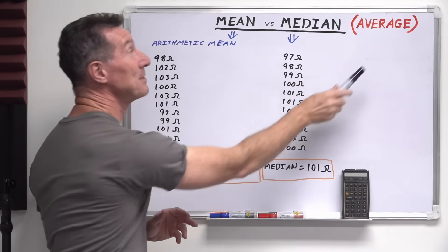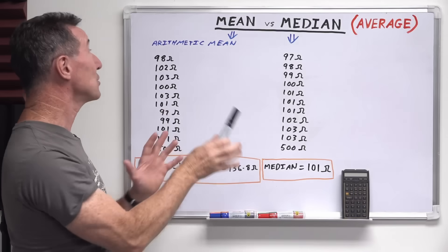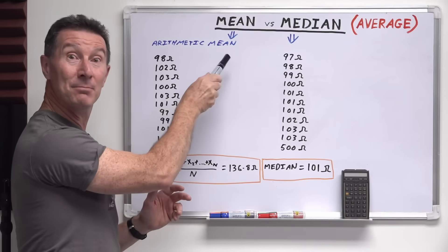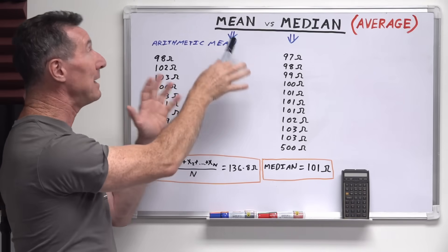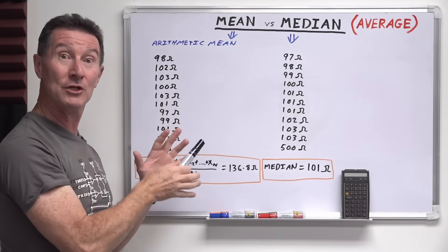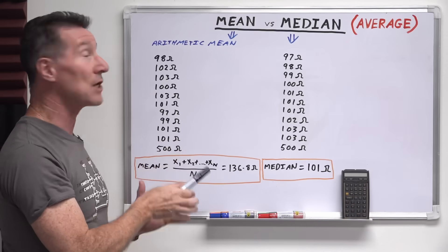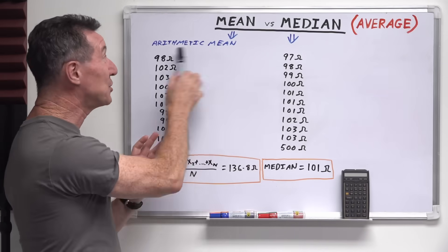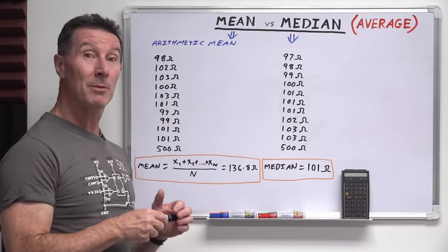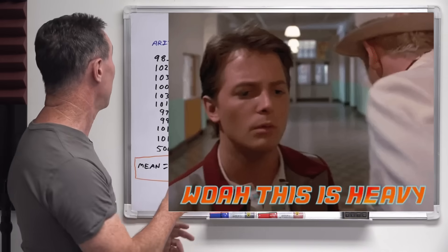But the mean is actually a specific type of average that's actually called the arithmetic mean. So when people say mean, that's the terminology that they actually mean. Or if they say average, that's generally what they mean. This is heavy.